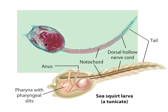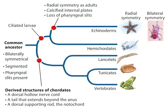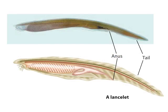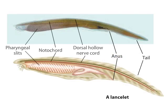In tunicates and lancelets, the pharynx with its slits functions as a straining device to filter small food particles. Lancelets are fish-like marine chordates. The adult lancelet is unique in displaying all three derived structures of chordates. The notochord is the most distinctive derived chordate trait; it is composed of a core of large cells with turgid, fluid-filled vacuoles, which make the notochord rigid but flexible.